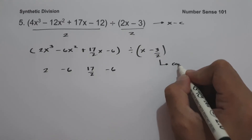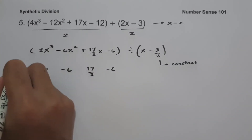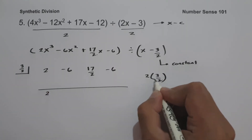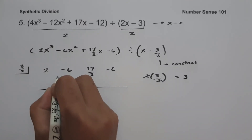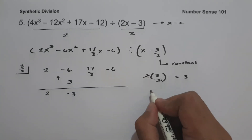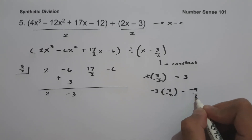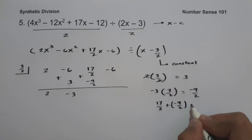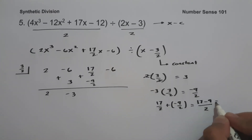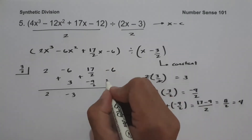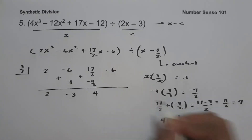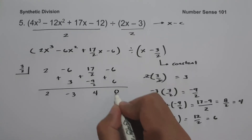Since our constant is negative three-halves, we take the opposite sign, positive three-halves. We bring down 2. Two multiplied by three-halves gives us 3. Negative 6 plus 3 is negative 3. Negative 3 multiplied by three-halves is negative nine-halves. Seventeen-halves plus negative nine-halves is 8 over 2, which is 4. Four multiplied by three-halves is 6. Negative 6 plus 6 is 0. So this will be our remainder.